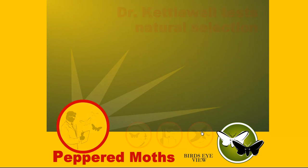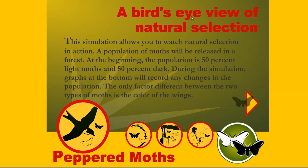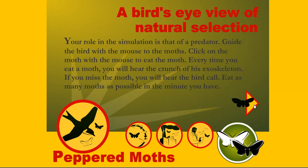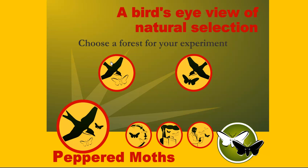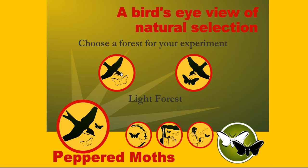Then you can go into the bird's eye view. This is the natural selection based on the bird. It talks about a forest being 50% light moths and 50% dark. During this simulation we're going to actually get to pick the different forests. It talks about predation — we're going to be a bird. Every time you crunch the exoskeleton, you'll actually hear and see what's going on. The first thing you do is you pick either the light forest or the dark forest. I'm going to pick the light forest because that's the way the forest used to be.